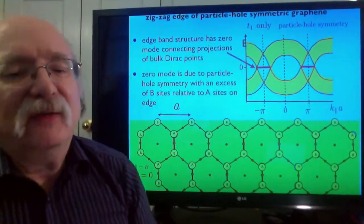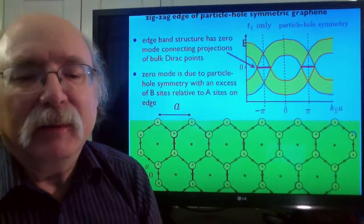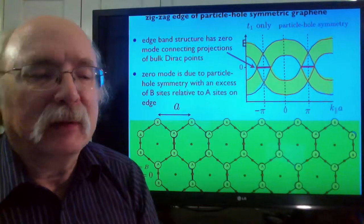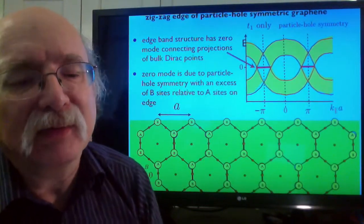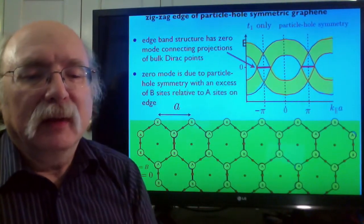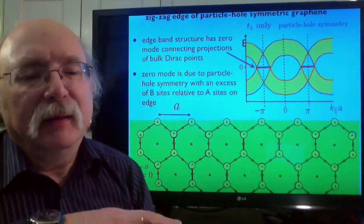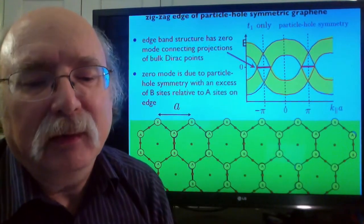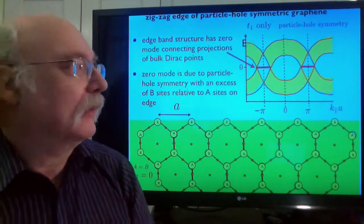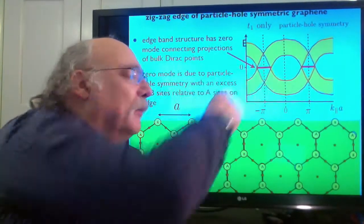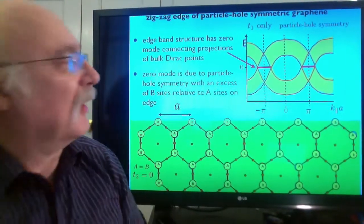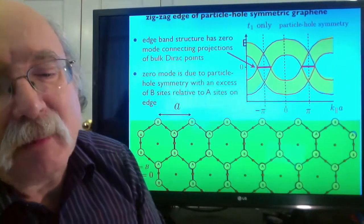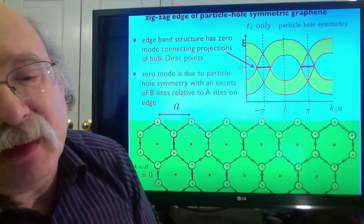To see what happens at the edge when this gap opens, it's very useful to look at the zigzag edge of the simple nearest neighbor hopping model, which does have this unphysical particle hole symmetry. In this model, because of particle hole symmetry, there is an exact zero mode edge state, an exact zero energy edge state on the zigzag edge. And it lives in one third of the Brillouin zone, and it connects the projections of the two different Fermi points from the bulk, Fermi Dirac points from the bulk, onto the edge Brillouin zone.